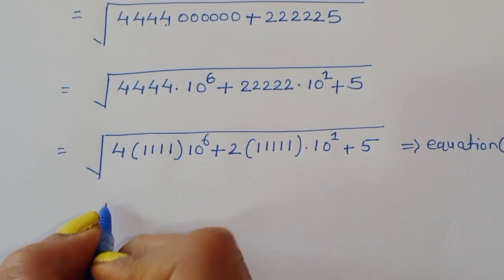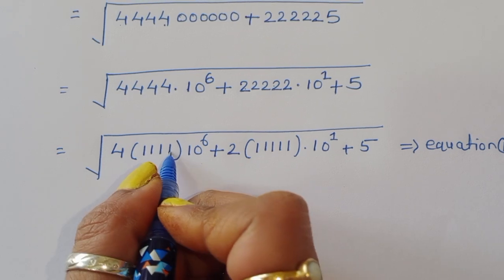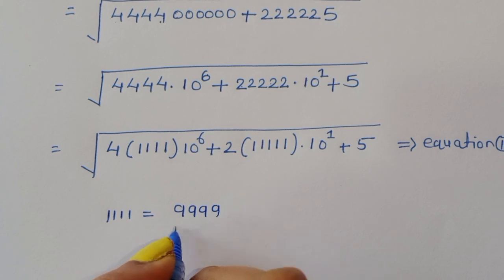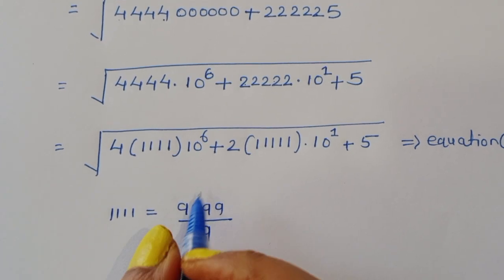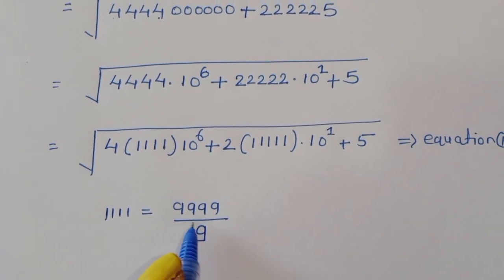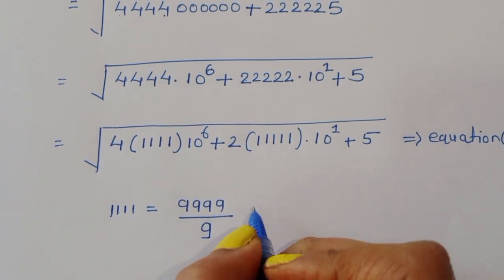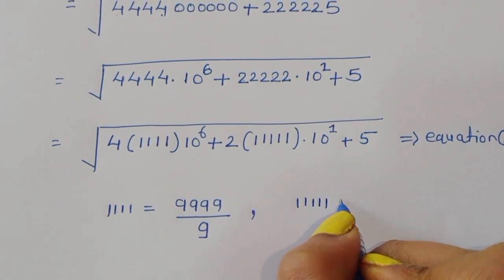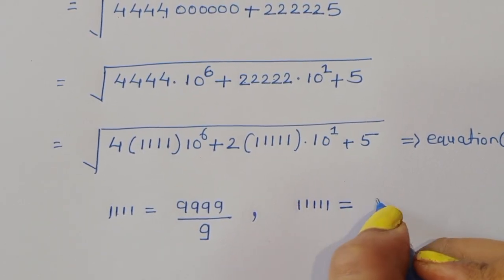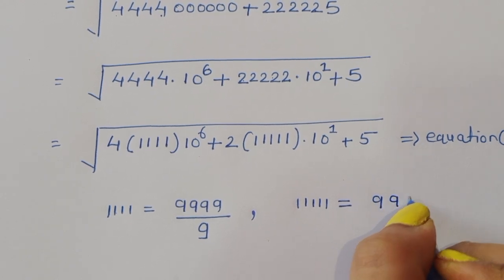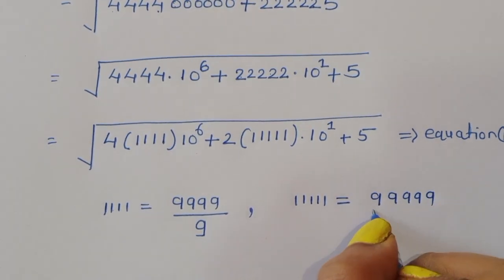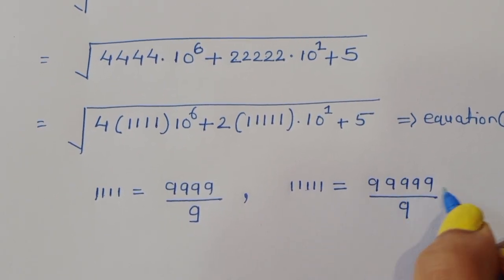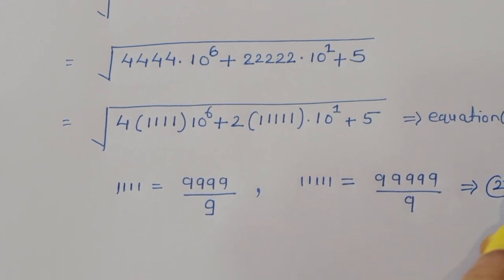We know that 11111 (five 1s) can be written as 99999 divided by 9. And 1111 (four 1s) can be written as 9999 divided by 9. This is because dividing a repunit of nines by 9 gives a repunit of ones. This is equation number 2.